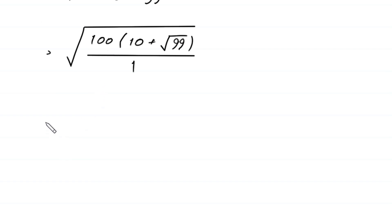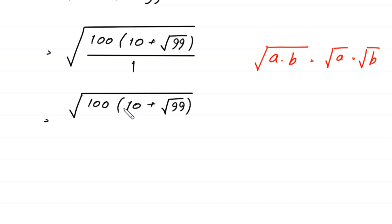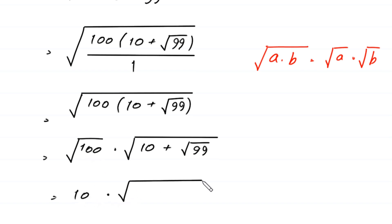Now this expression is equal to square root of 100 times (10 plus square root of 99). By using the property that square root of a times b equals square root of a times square root of b, this becomes square root of 100 times square root of (10 plus square root of 99). Since square root of 100 equals 10, we get 10 times square root of (10 plus square root of 99).